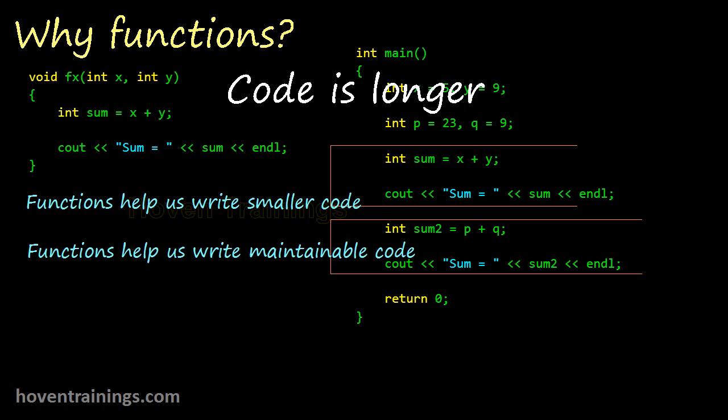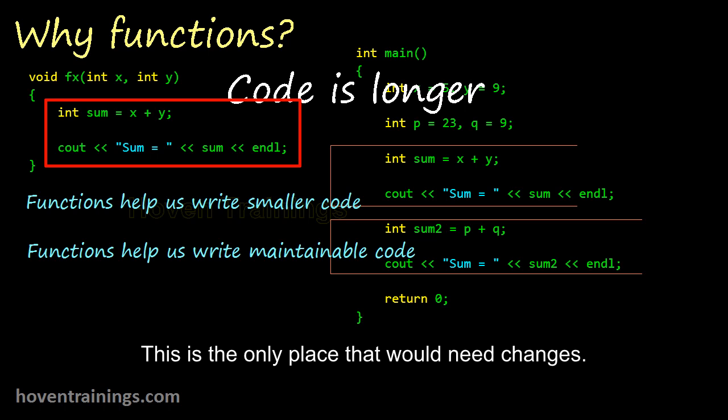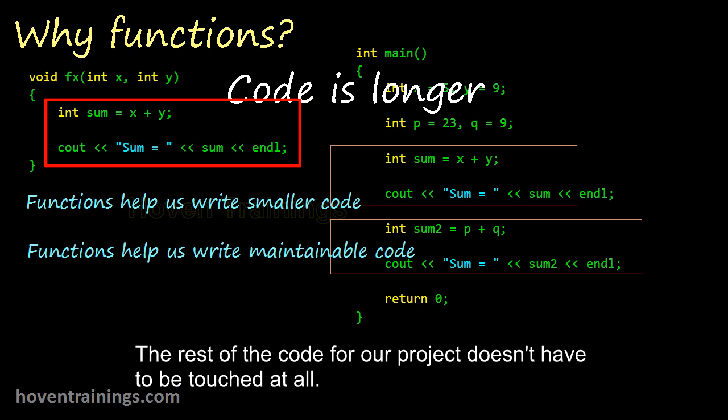Functions help us write maintainable code. How? Code inside a function is at a single place. This makes it more practical and easy to maintain the code. This is the only place that would need changes. The rest of the code for our project doesn't have to be touched at all.